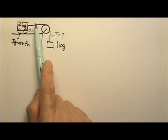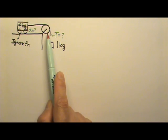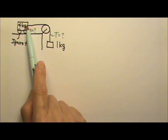Again, we're treating the string as massless, pulley as massless, and there's no friction at the pulley, so we can say the tension is the same throughout.